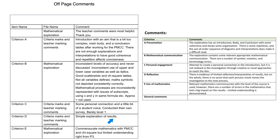Criterion D is reflection: simple explanation of results, evidence of limited reflection on interpretation of results, but on the whole there is no sense that each process result moves the investigation to the next process. For criterion E, use of mathematics: commensurate mathematics with the Pearson product moment correlation coefficient and chi-squared, but limited understanding right from page three. There are a number of errors in the mathematics that had a big impact on the results. We both gave this a nine out of twenty.